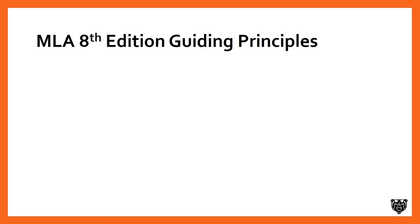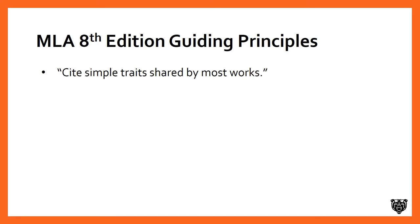It is important to talk a little bit about the guiding principles behind MLA 8th edition. The Modern Language Association is really making an effort to simplify the citation process and to make it more intuitive. These principles come right out of the MLA Handbook. The first principle is to cite simple traits shared by most works — most things we cite share a certain number of elements in common, regardless of their formats. In practice, this means there are no longer distinctions between web and print formats.